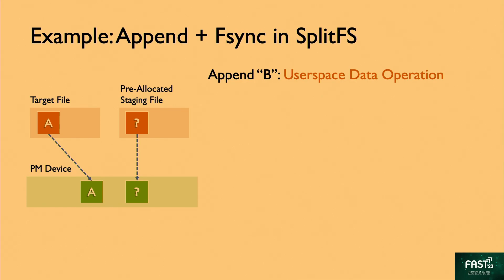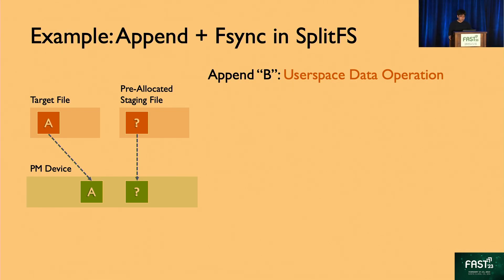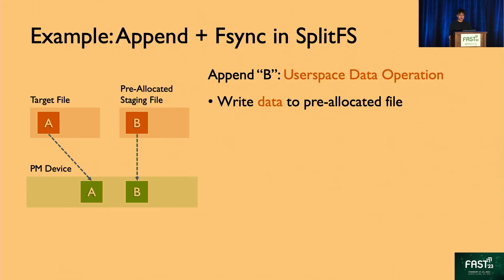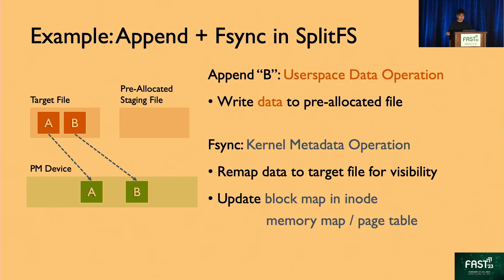For example, let's take a look at append followed by fsync in a prior work, SplitFS. On the left, the target file to append already has a block A mapped to some blocks stored on the persistent memory. SplitFS introduced the notion of a pre-allocated staging file so that append can be handled in user space. To append block B, SplitFS just needs to write the data directly to this pre-allocated file. But the appended data is not visible to other processes until an fsync that remaps the data from the pre-allocated file to the target file for visibility.